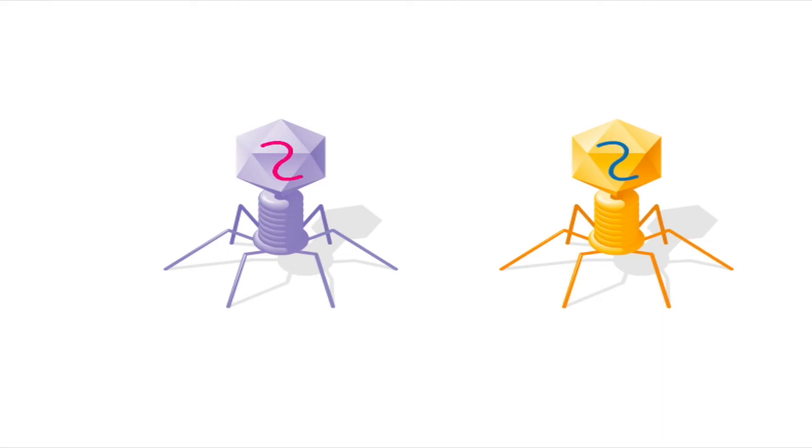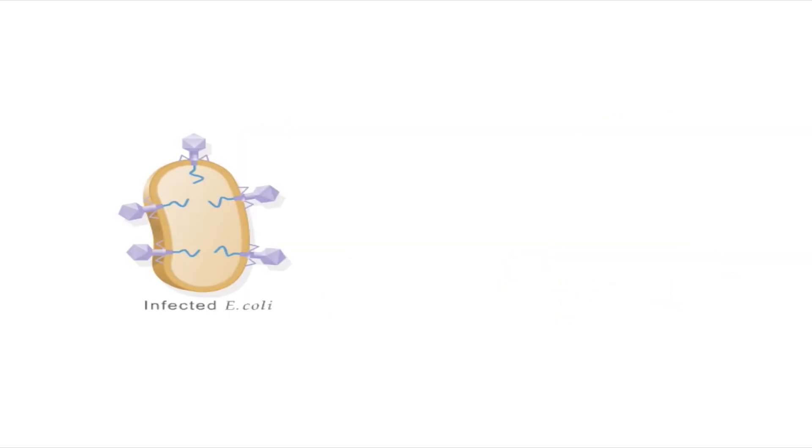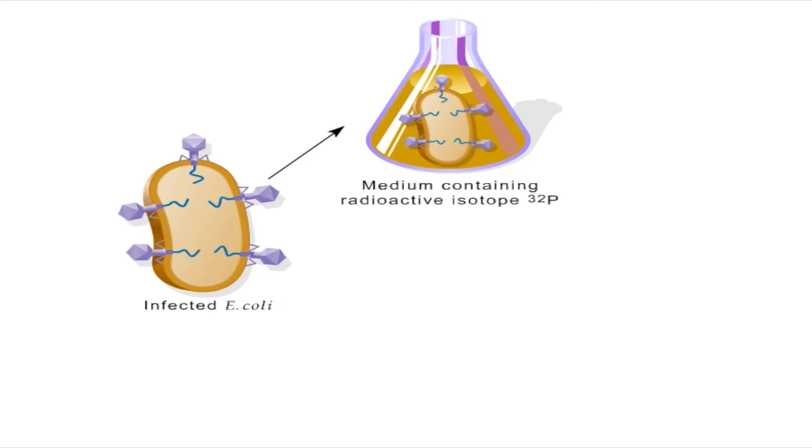For their experiment, the scientists prepared T2 phages that either had radioactive DNA or radioactive proteins. To make the components radioactive, Hershey and Chase infected E. coli with T2 and grew the bacterial cells in two different culture media.